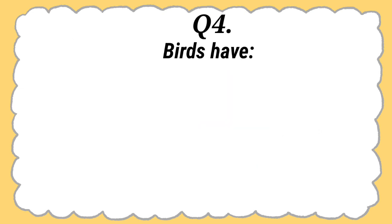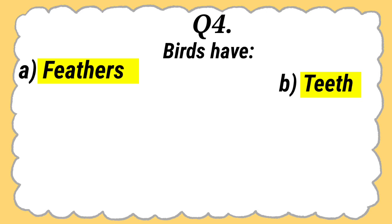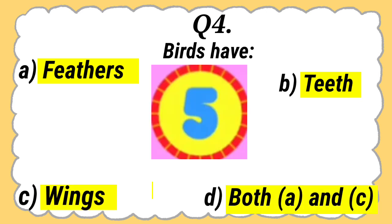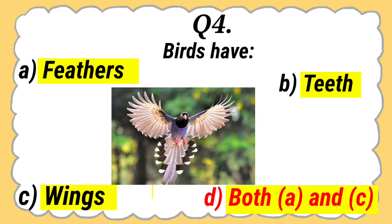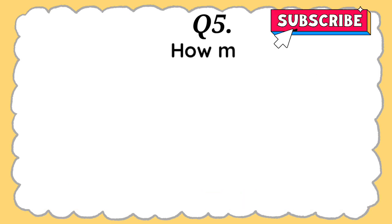Question 4: Birds have feathers, teeth, wings, or both A and C. And the answer is both A and C. Birds have feathers and wings both.